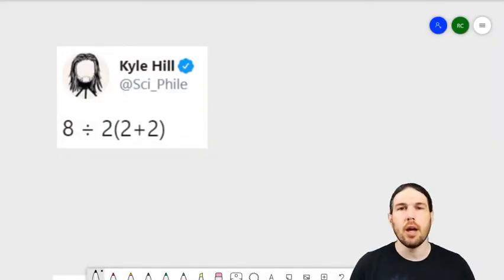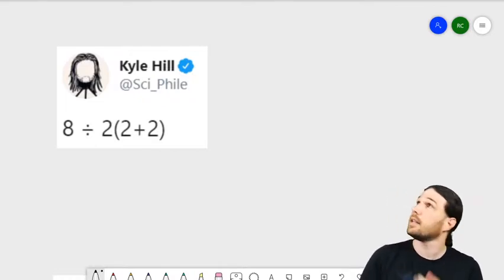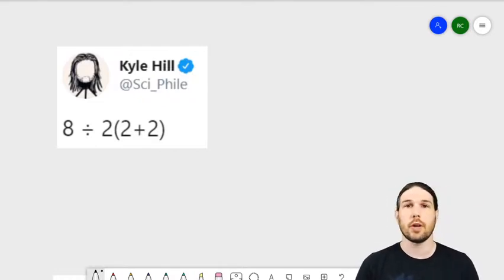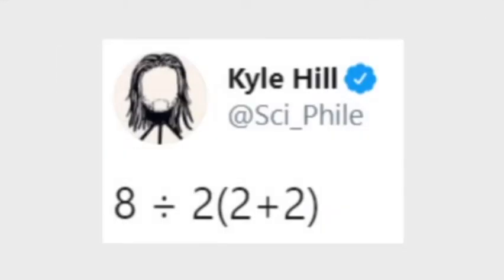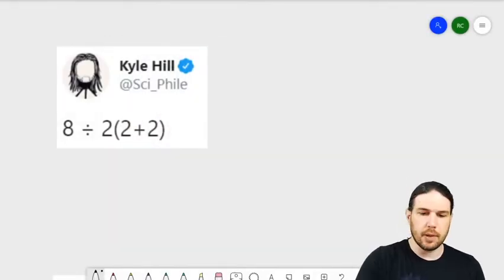Hello and welcome back to the channel. On September 16th, noted YouTuber, smart guy, and totally not a supervillain Kyle Hill posed this question to his Twitter followers: 8 divided by 2 times parentheses 2 plus 2. And he gave two options for the answer. He said it could be 1, and he said it could be 16.